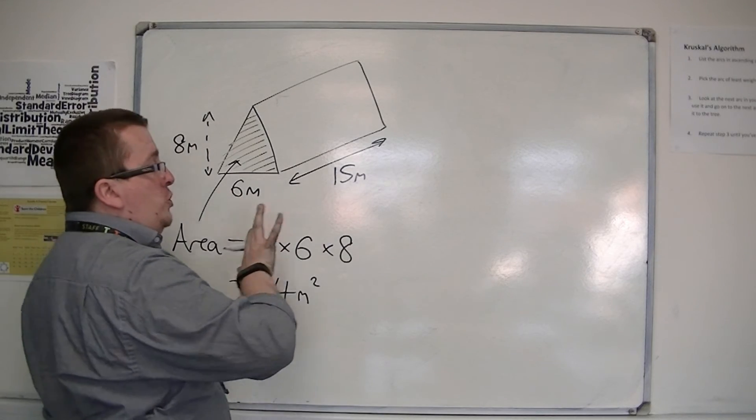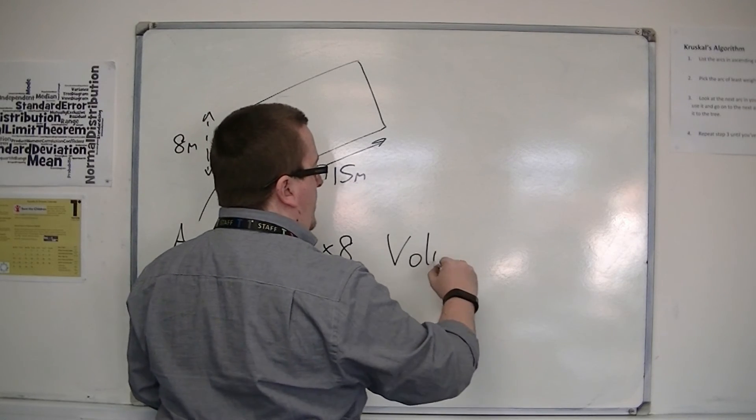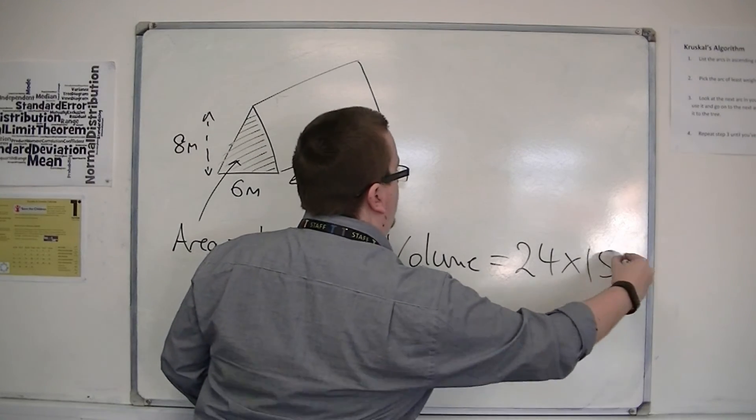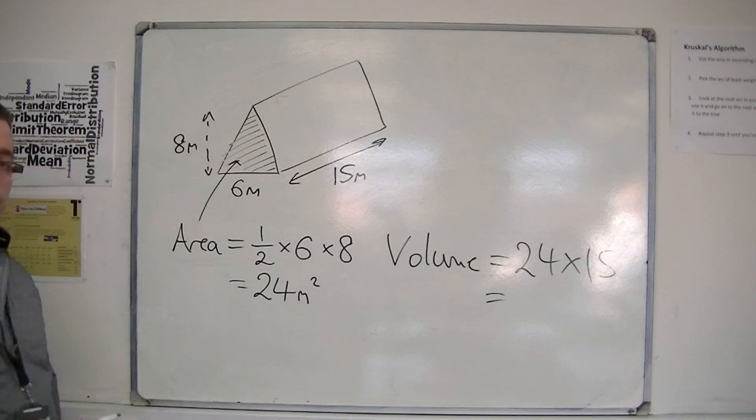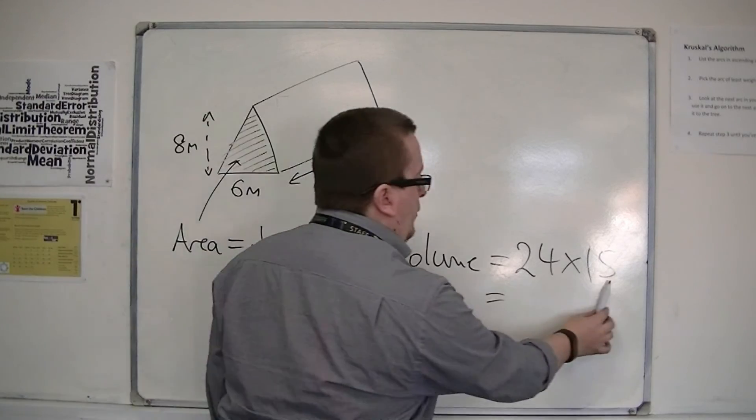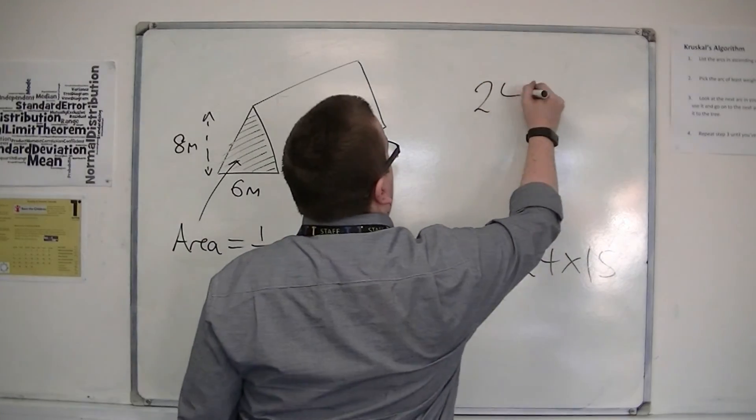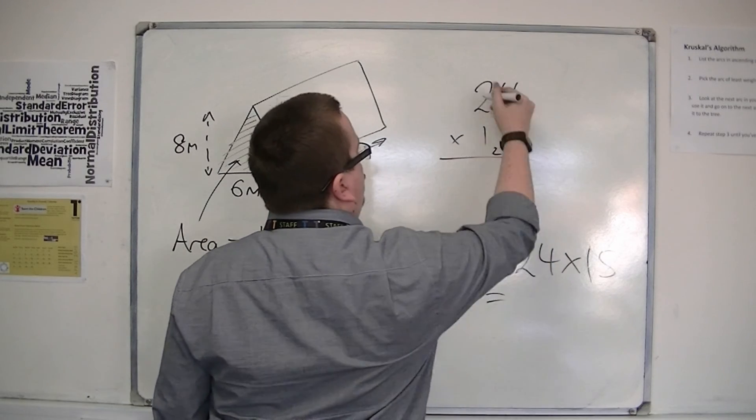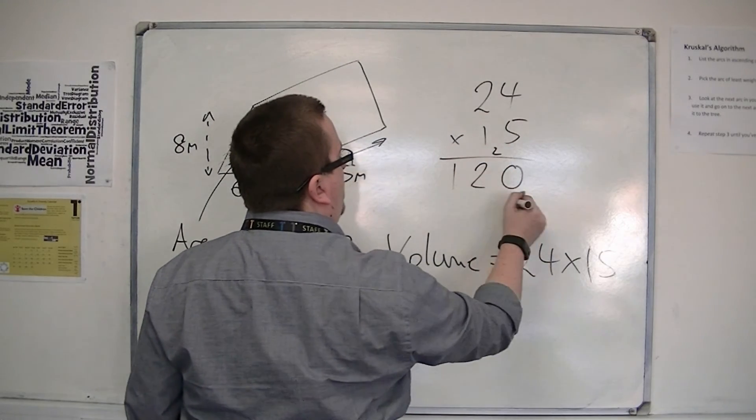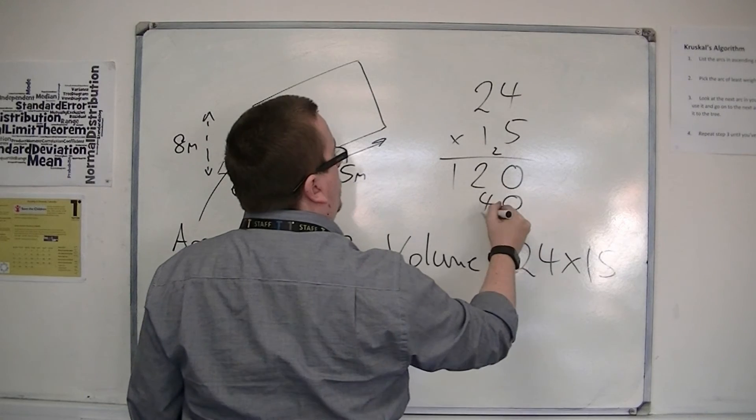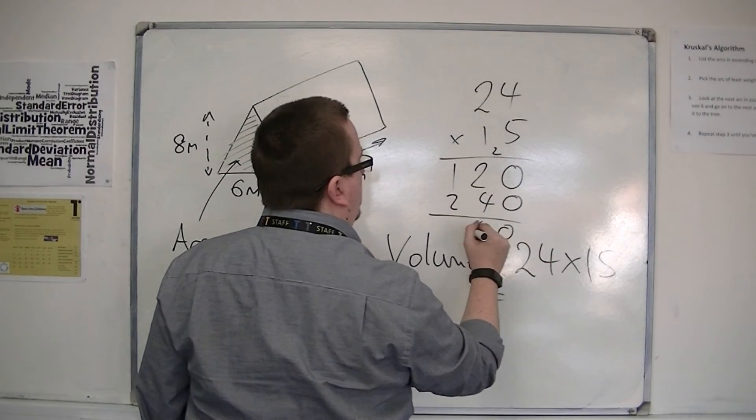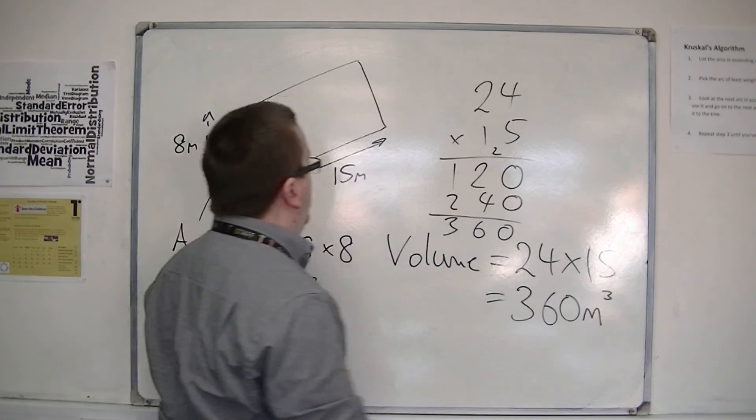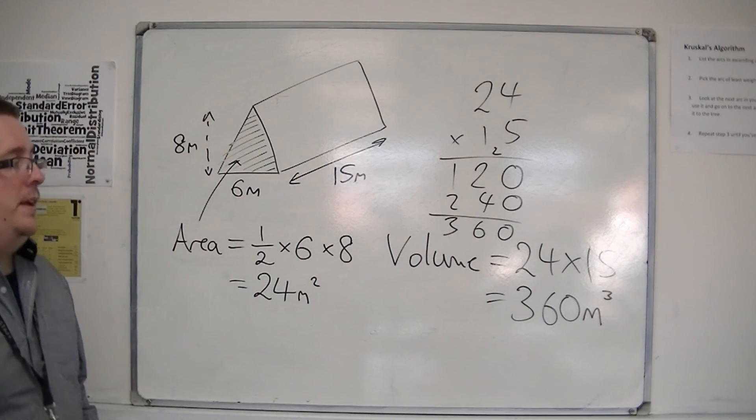The volume of the shape is when we multiply that 24 by the depth of the shape, 15. So 24 times 15, do a little calculation. 4 5s are 20, 2 5s are 10, plus 2 is 12. 1 4, 1 2, add them together. And we get 360, and that will be cubic metres, metres cubed.